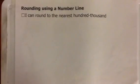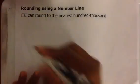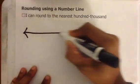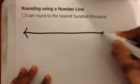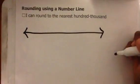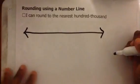Rounding using a number line. I can round to the nearest hundred thousand. When using a number line, you already know something about a number line that's going to help you round.